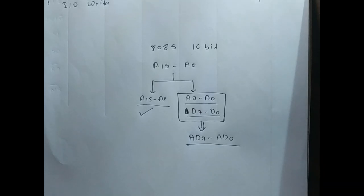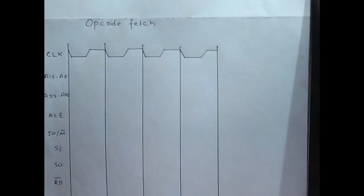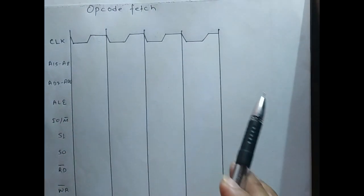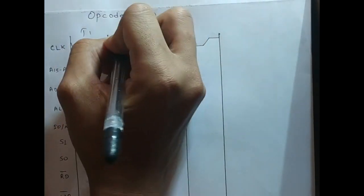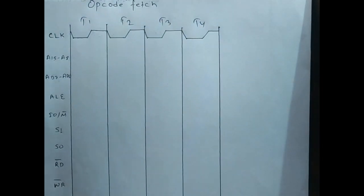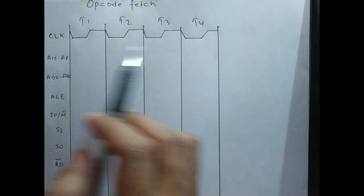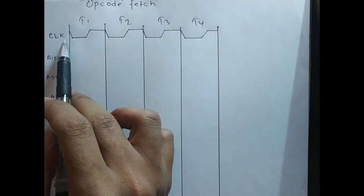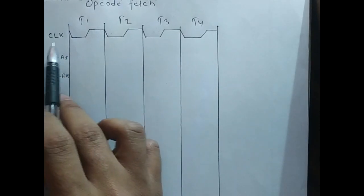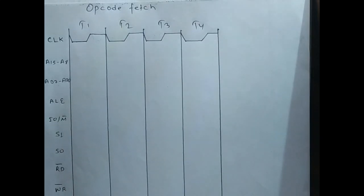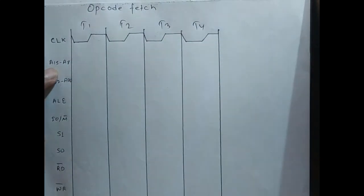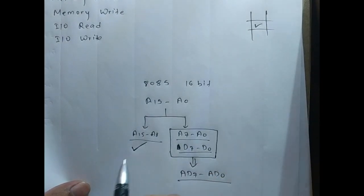Now let's go into drawing the timing diagram. Opcode fetch consists of four T-states: T1, T2, T3, T4. The first signal is the clock signal. As we know, 8085 works on 3 MHz with a 50% duty cycle, so the clock signal has half the portion low and half upper. You can just draw it roughly. The second signal is A15 to A8, which always carries the higher order memory address.